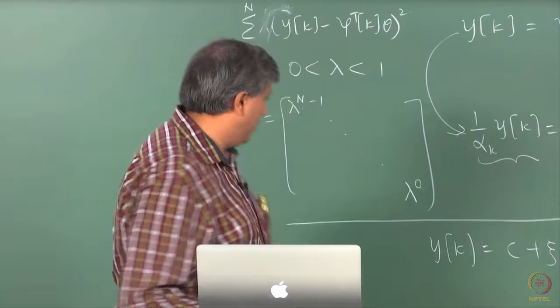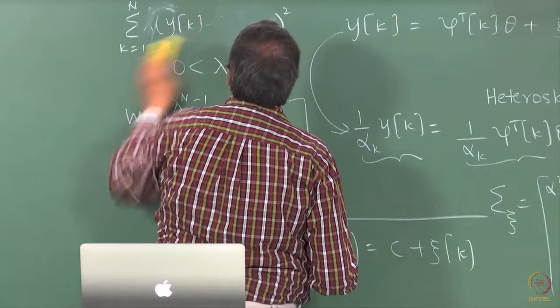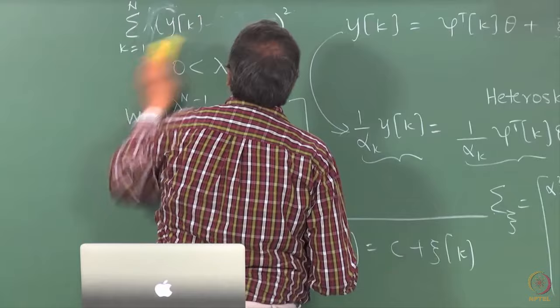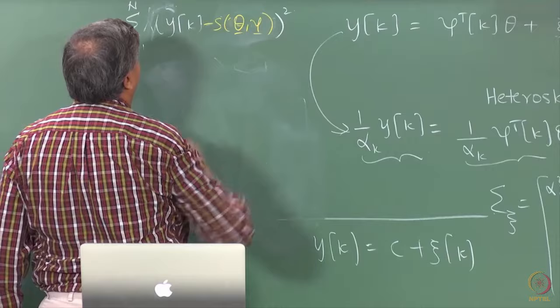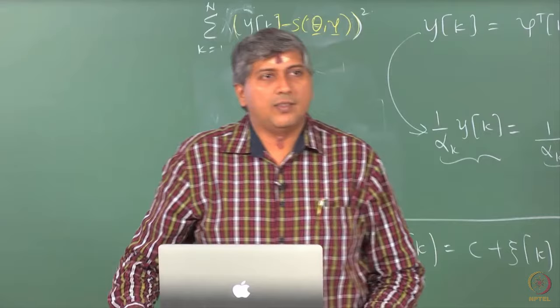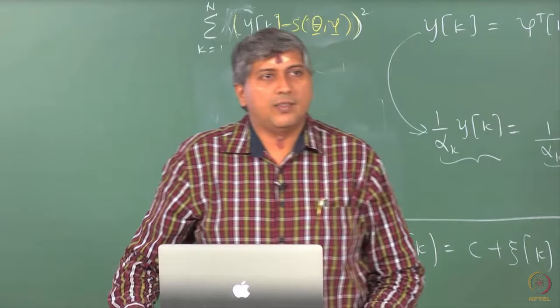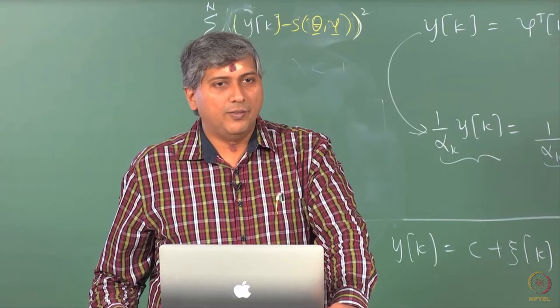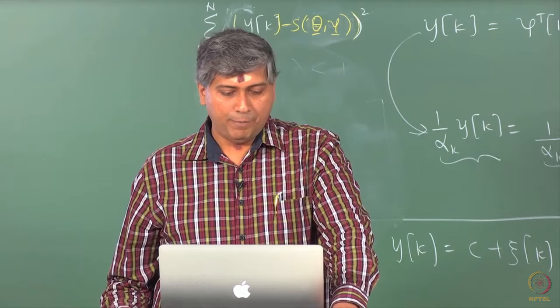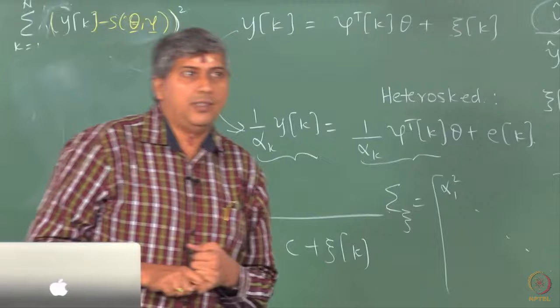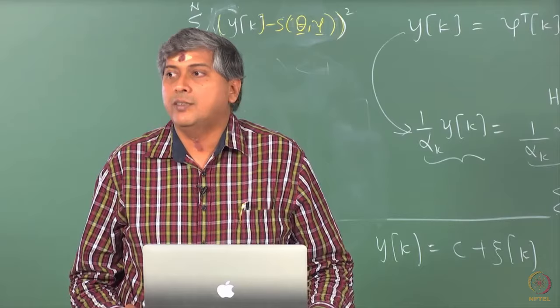When you take the derivative of this objective function with respect to theta, you do not end up with linear equations. You will end up with a bunch of non-linear equations, and we know already the pains associated with solving non-linear equations. That is the first problem with non-linear least squares: I do not end up with linear equations, which means I cannot first of all write an analytical solution. That is a big problem when it comes to computation.